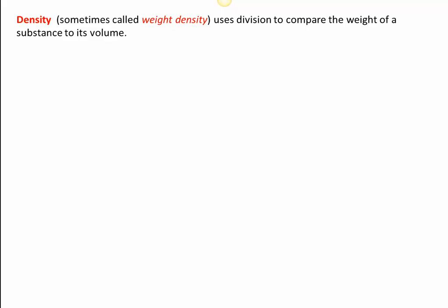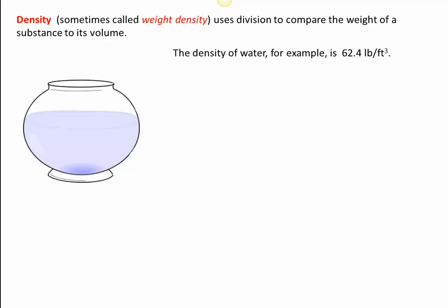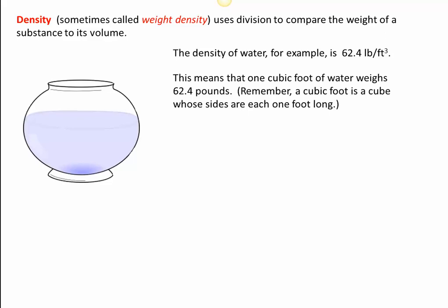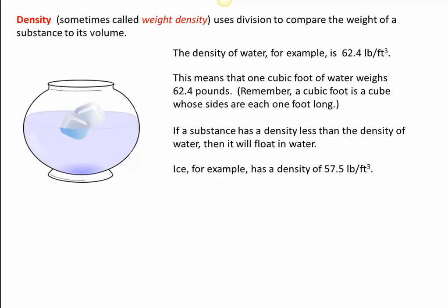Let's talk about density. Density is the word that belongs in the blank. Density is sometimes called weight density, but the other types of densities that we have get used so infrequently that we just sort of leave off the word weight and call it density. We use division to compare the weight of a substance to its volume. For example, the density of water is 62.4 pounds per cubic foot. What that means is that one cubic foot of water weighs 62.4 pounds. If a substance has a density less than water, well, then it floats like ice. Ice has a density of 57.5 pounds per cubic foot. If we want to calculate density, our guide is the units. Pounds per cubic foot means that we will divide the weight by the volume.